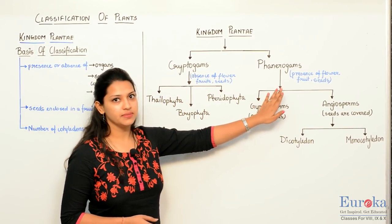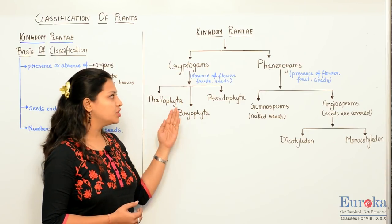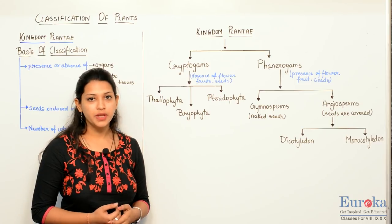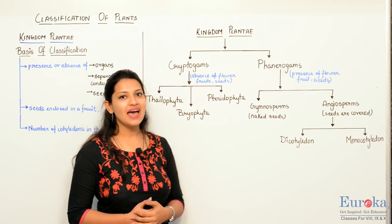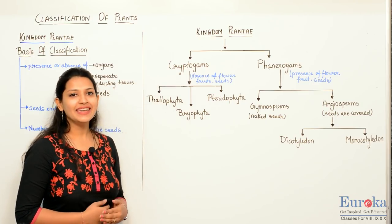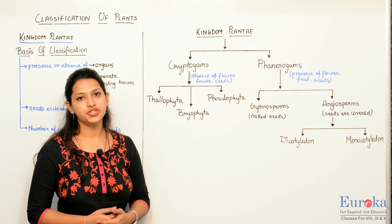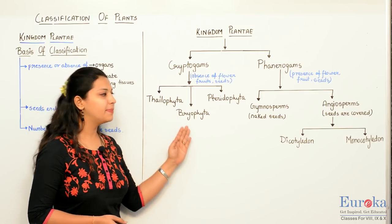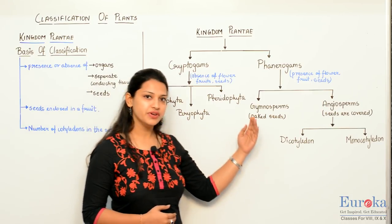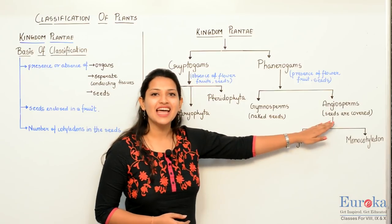Cryptogams and Phanerogams. Cryptogams are those classes of plants which do not have flowers, seeds and fruit. Whereas Phanerogams have flowers, seeds and fruits. Depending upon different characteristics, cryptogams are divided into three divisions: Thallophyta, Bryophyta and Pteridophyta. Whereas Phanerogams are divided into two divisions: Gymnosperms and Angiosperms.